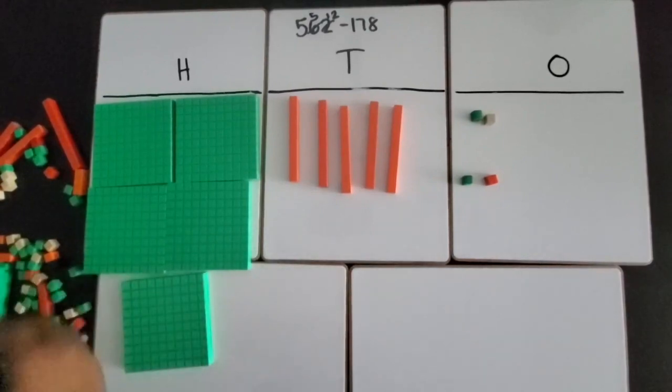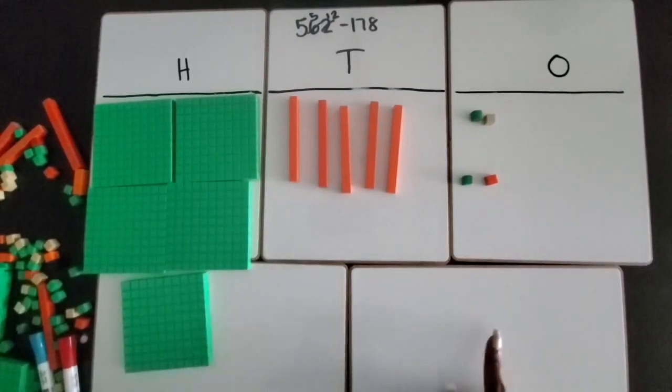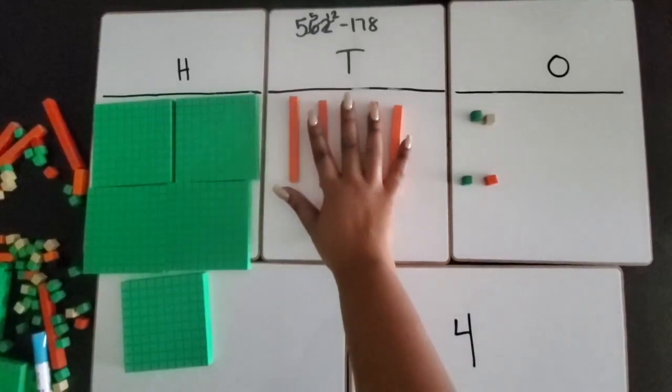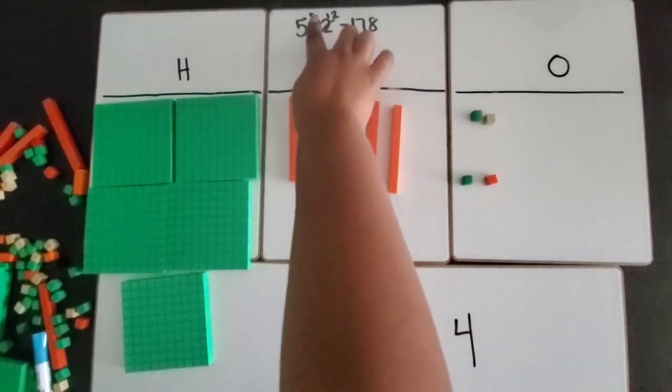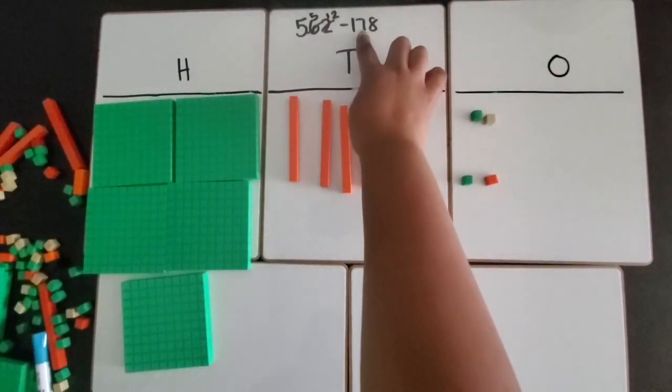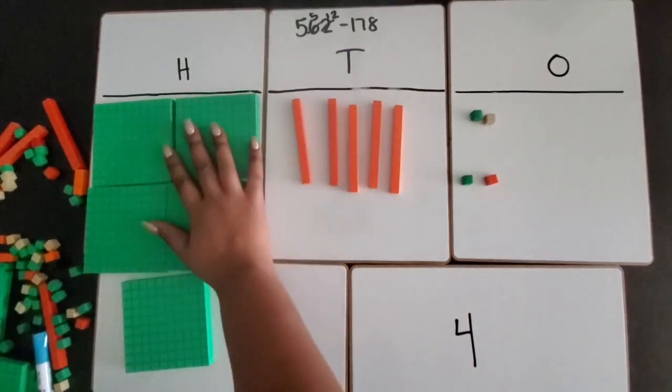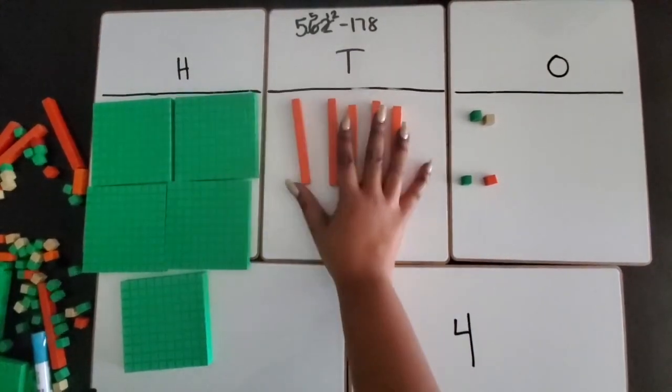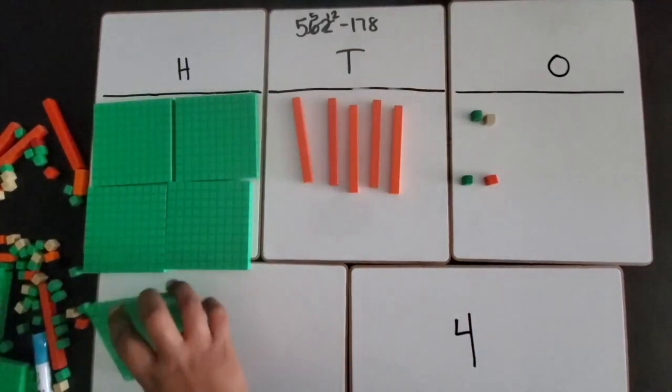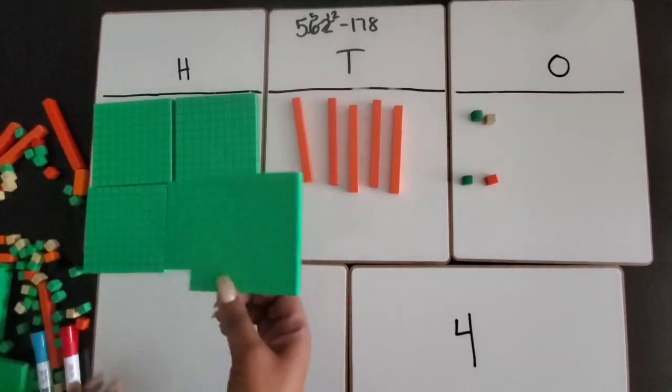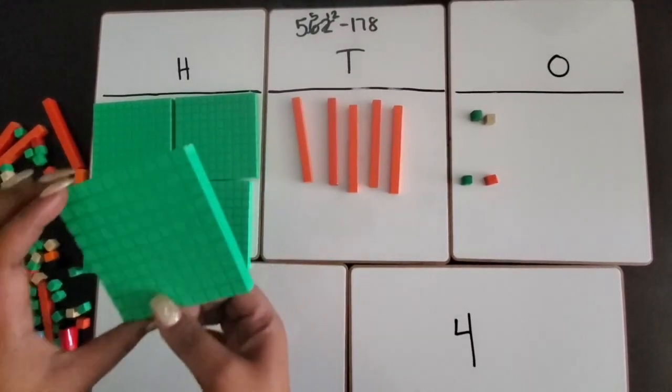With the tens that I still have, five, I need to subtract seven tens. I don't have seven tens, so I need to regroup one of the hundreds in order to have enough tens to subtract seven tens. I'm going to regroup one of the hundreds, not 10 hundreds, one 100 flat.